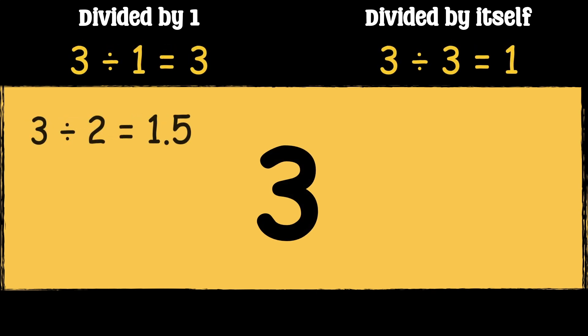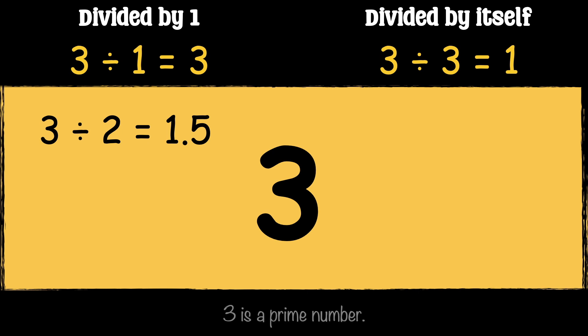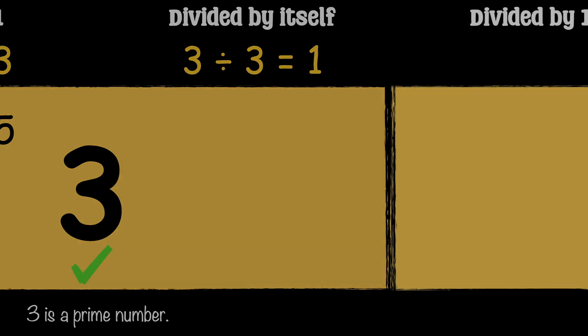Let's see what numbers we can divide 3 by. 3 can only be divided by 1 and itself, so 3 is a prime number.